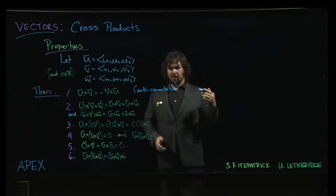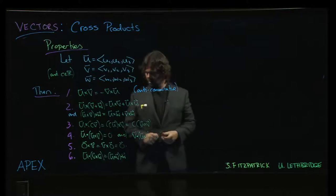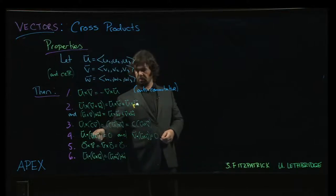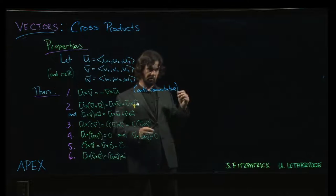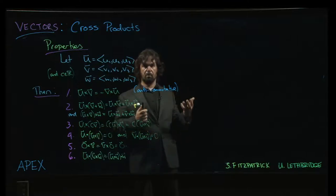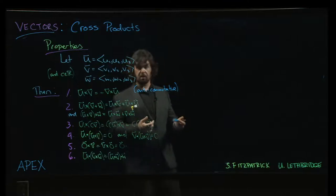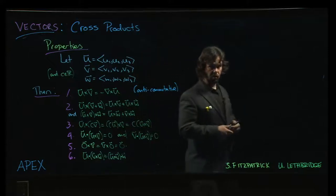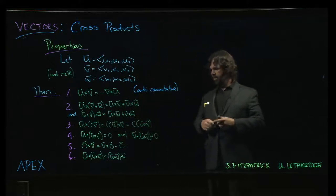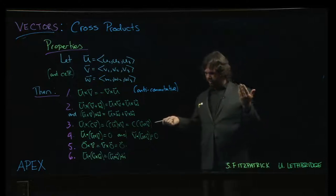We saw in the construction of the cross product that the dot product of the cross product with either of the two vectors you started with should be zero. The whole point of the cross product is to give you something that is orthogonal to the vectors you started with. And if you cross with the zero vector you get zero.